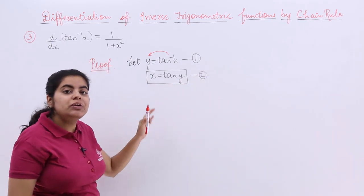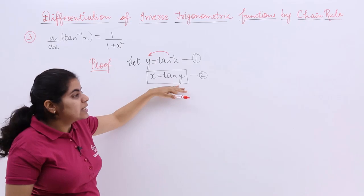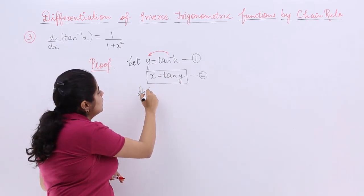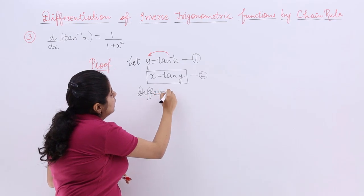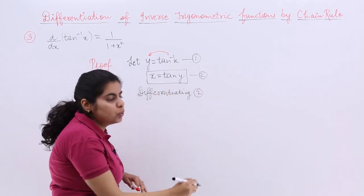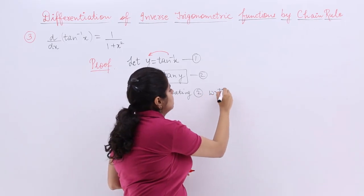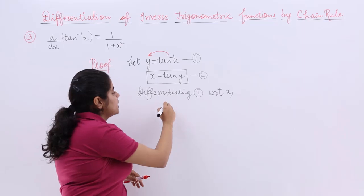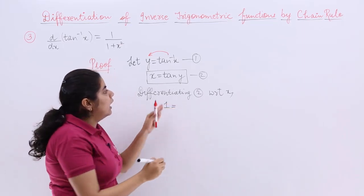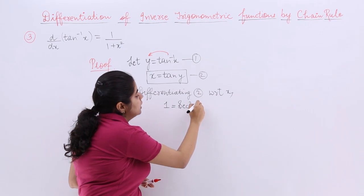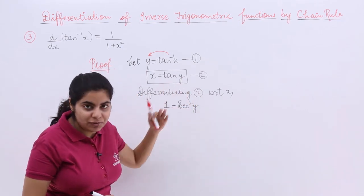Now you have to differentiate this second equation with respect to x. So differentiating equation 2 with respect to x, it is x with respect to x giving me 1.